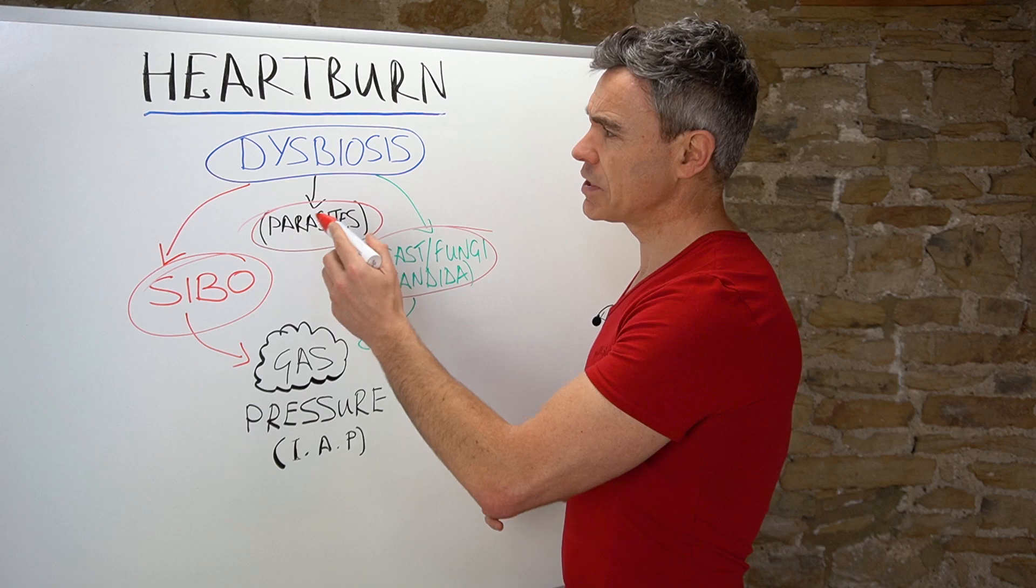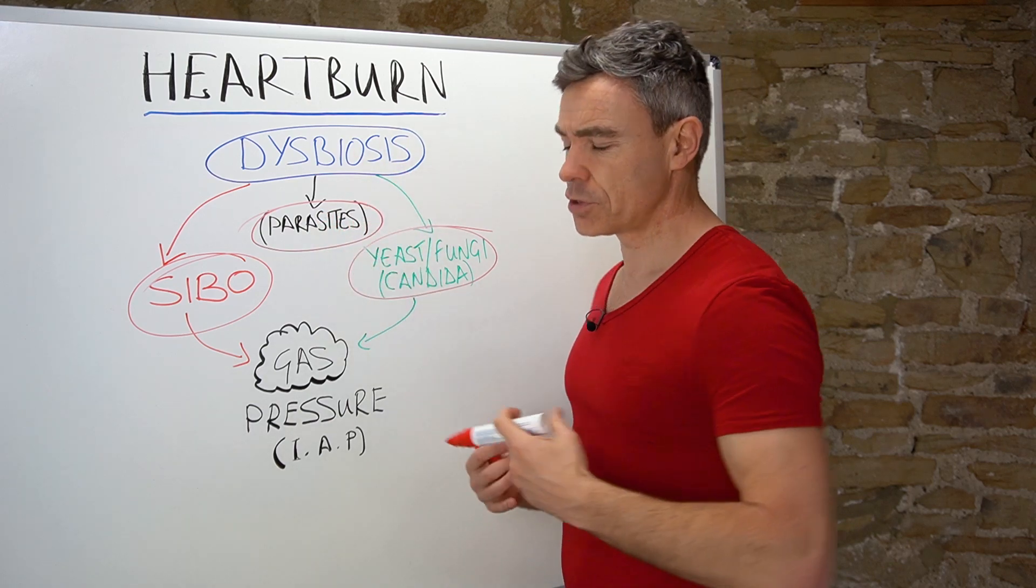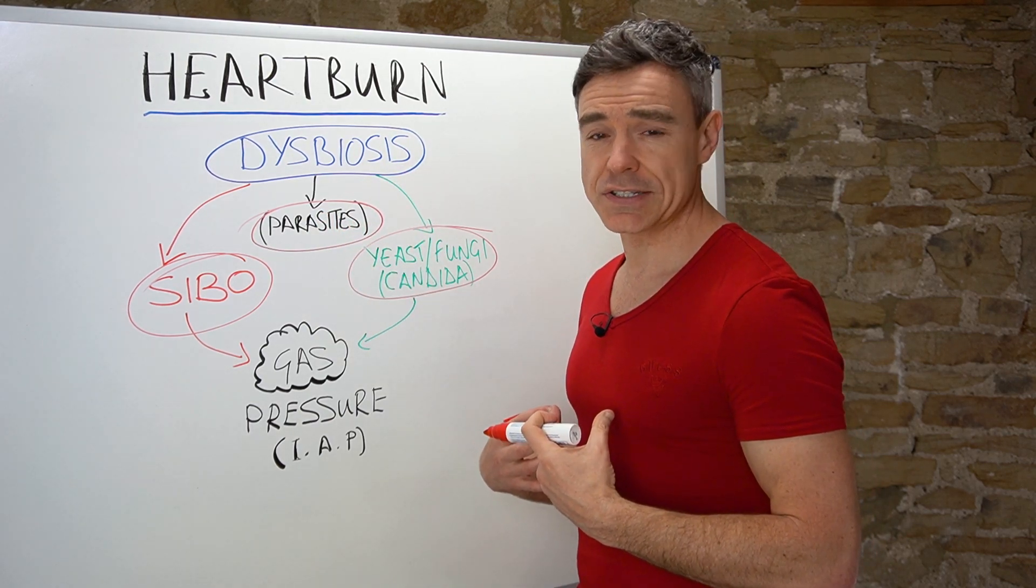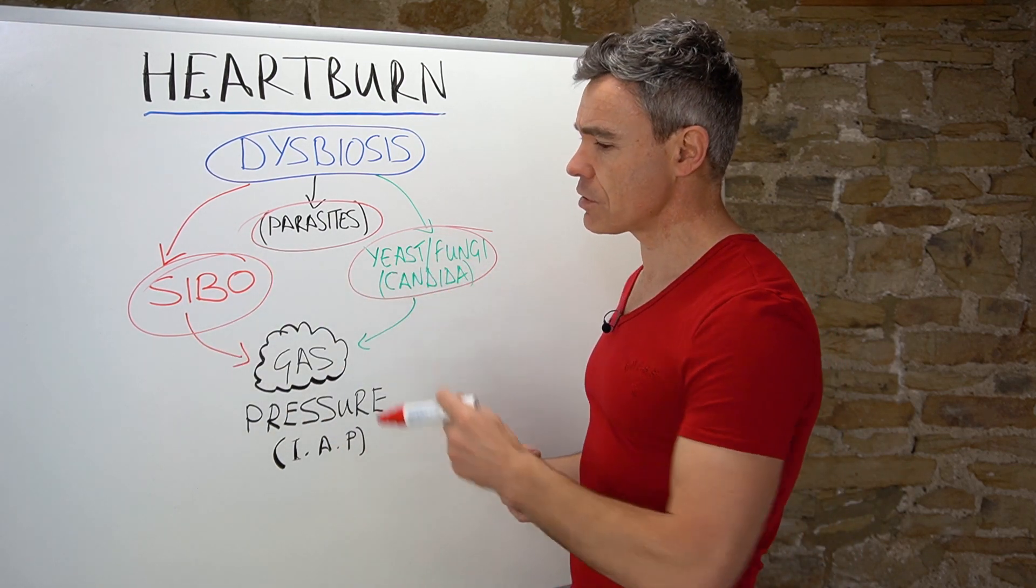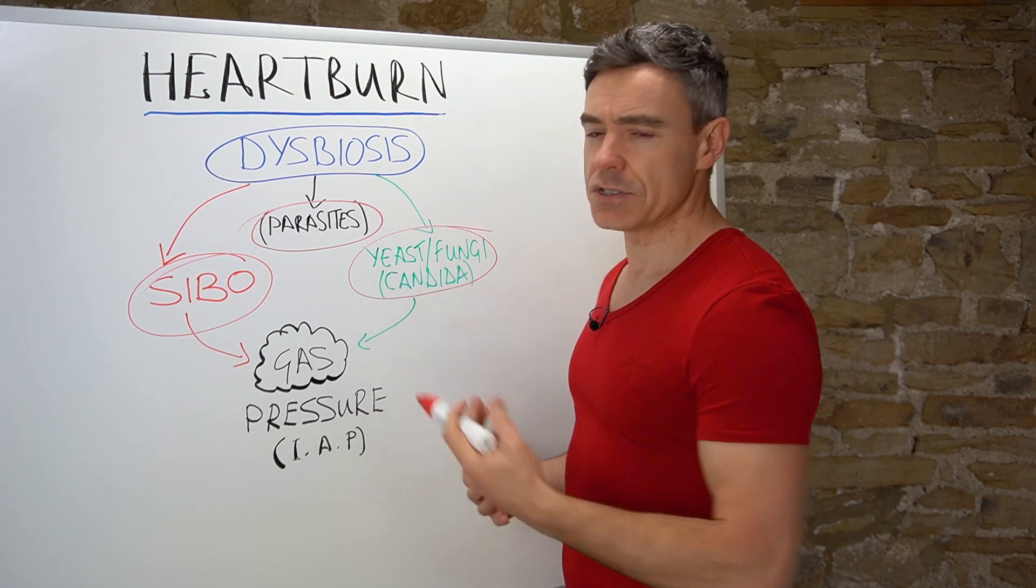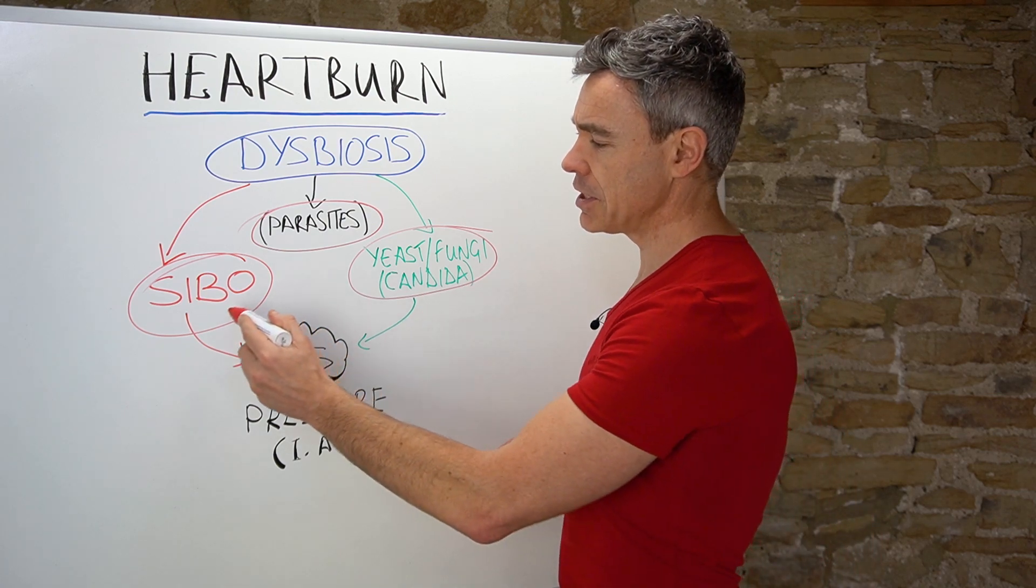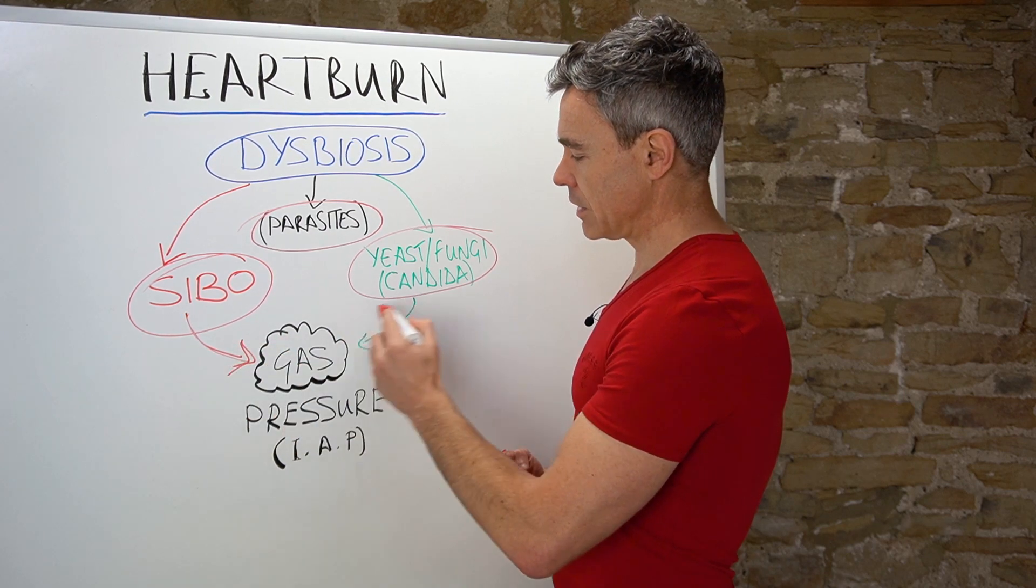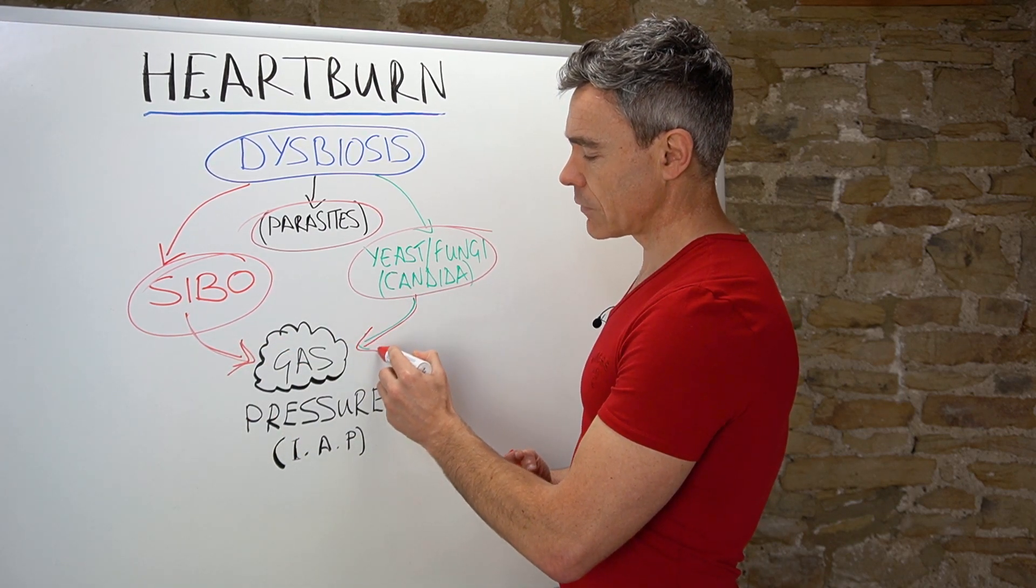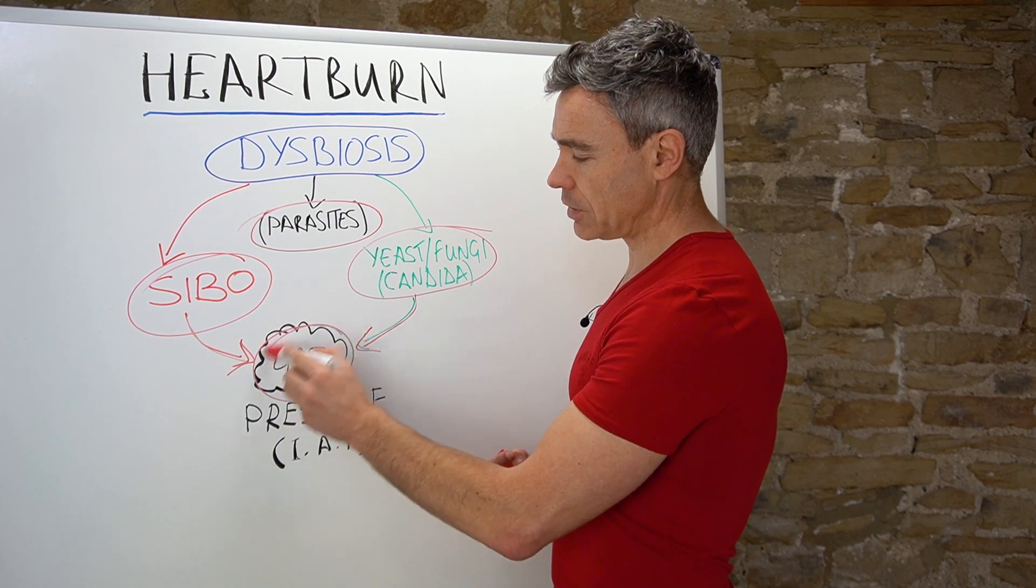Now parasites would typically cause heartburn through irritation of the upper small intestine, but SIBO and yeast and fungal overgrowth, the reason why heartburn happens is because they ferment carbohydrate foods when they're overgrowing in the system, and that creates gas.